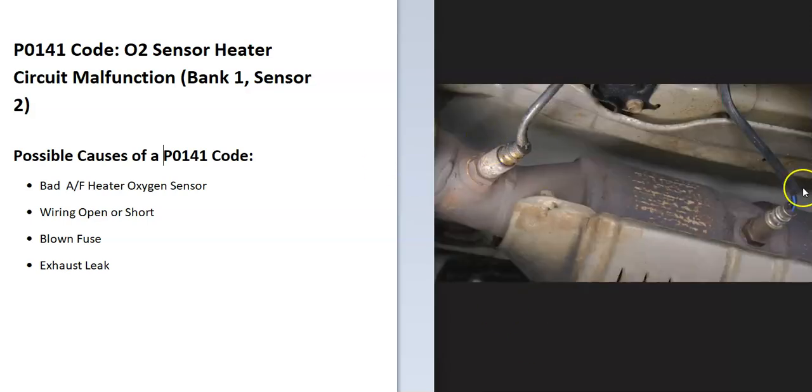O2 sensors are located on the exhaust and do two things. First, they monitor how much oxygen was burnt off during combustion, and the onboard computer uses this information to adjust the air-fuel ratio. Second, they have heater elements built in which help the system go into closed loop quicker. With the P0141 code, the onboard computer is seeing a problem with these oxygen sensors.